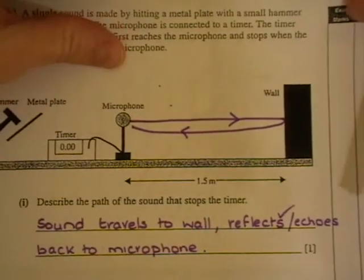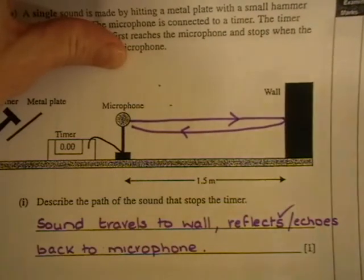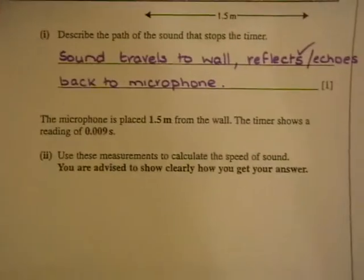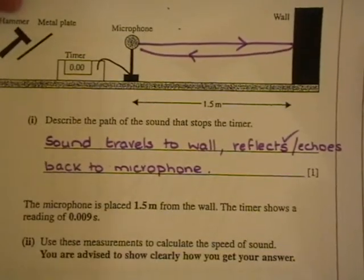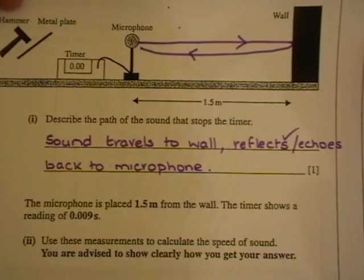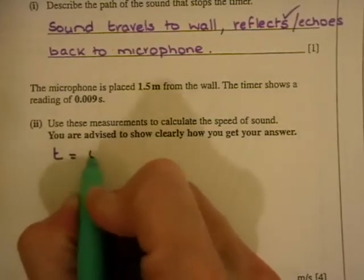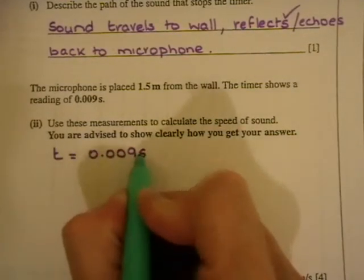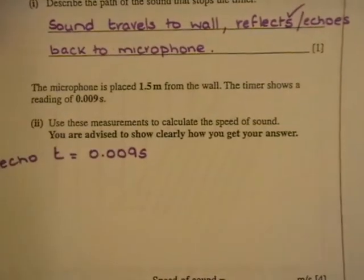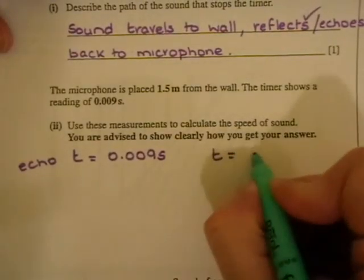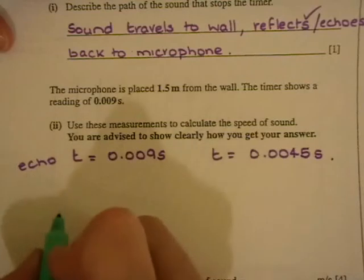The microphone then is placed 1.5 metres from the wall. The timer shows a reading of 0.009 seconds. Use these measurements to calculate the speed of sound. This is an echo question because it tells you that the timer takes 0.009 seconds by the time the echo is received again. So as normal in echo questions, if you take the time and divide it by 2, that tells you how long it actually took to get to the wall. So the time, that's the echo time, but so then the actual time is 0.009 divided by 2 gives you 0.0045 seconds.